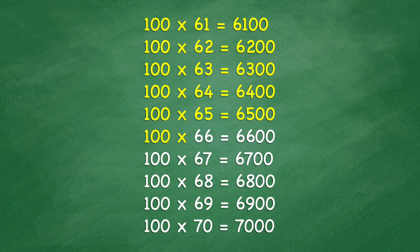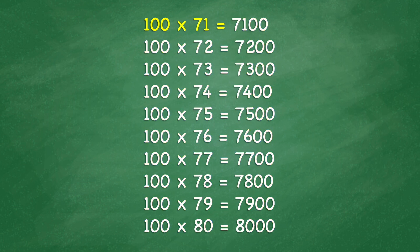100 times 66 equals 6,600. 100 times 67 equals 6,700. 100 times 68 equals 6,800. 100 times 69 equals 6,900. 100 times 70 equals 7,000. 100 times 71 equals 7,100.